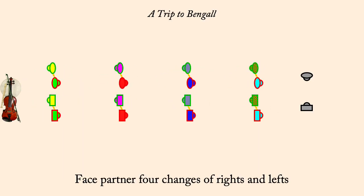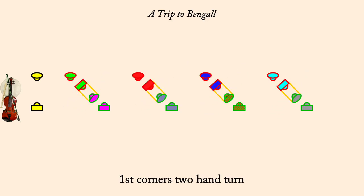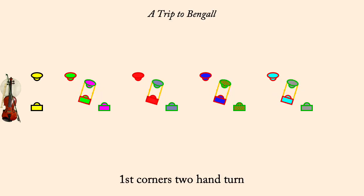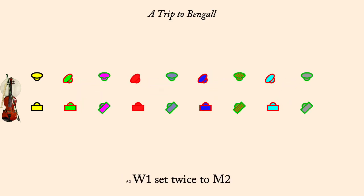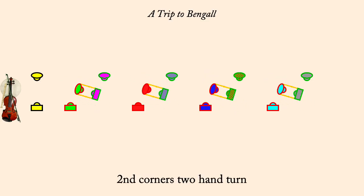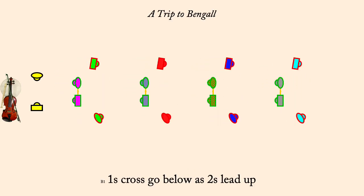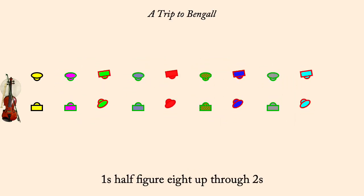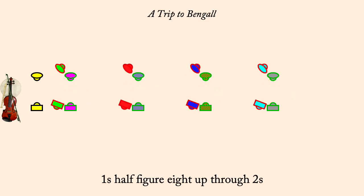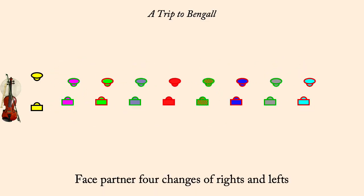Man one set twice to woman two. First corners two-hand turn. Woman one set twice to man two. Second corners two-hand turn. One's cross, go below as twos lead up. One's half figure eight up through twos. One's set, face partner, four changes of rights and lefts.